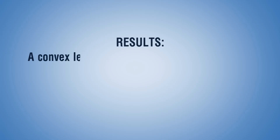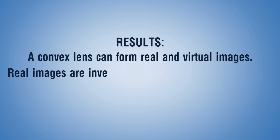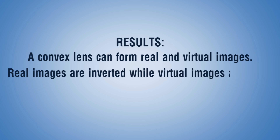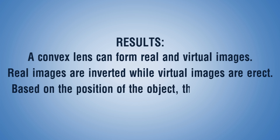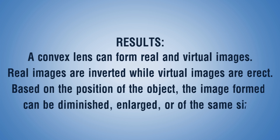Results: A convex lens can form both real and virtual images. Real images are inverted, while virtual images are erect. Based on the position of the object, the image formed can be diminished, enlarged, or of the same size.